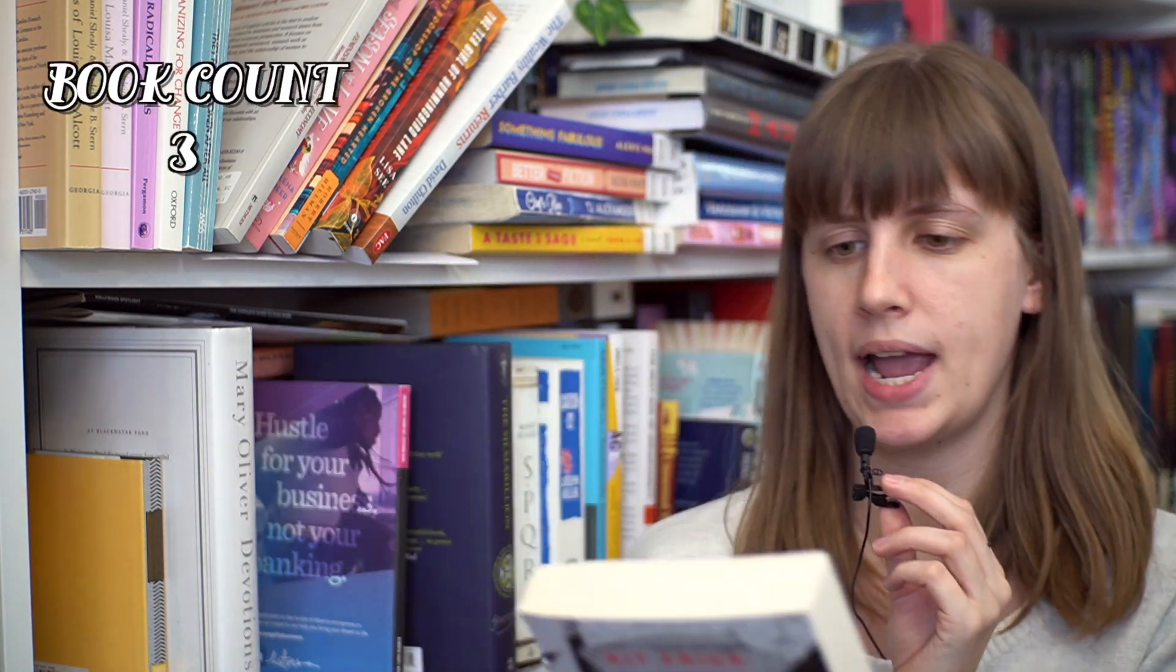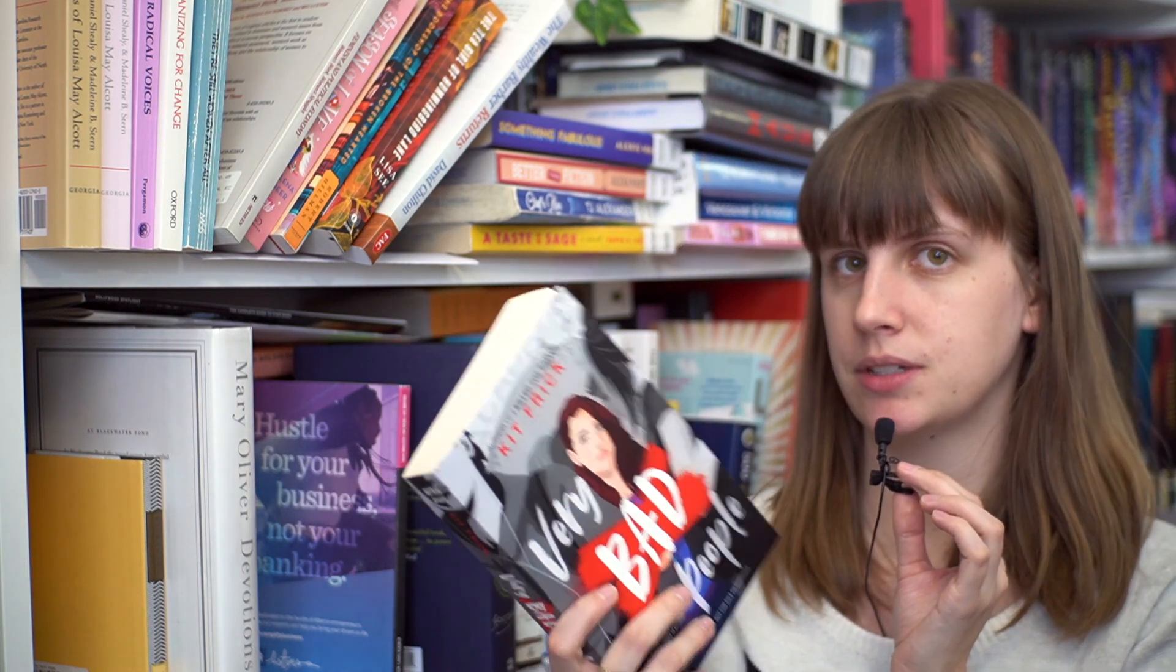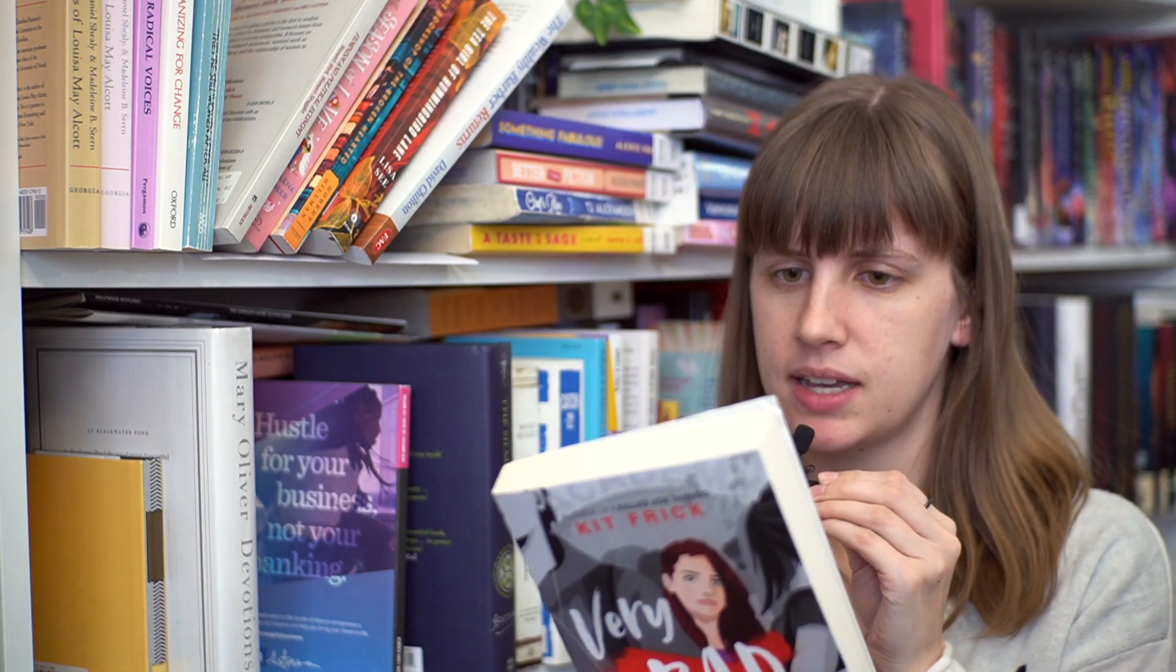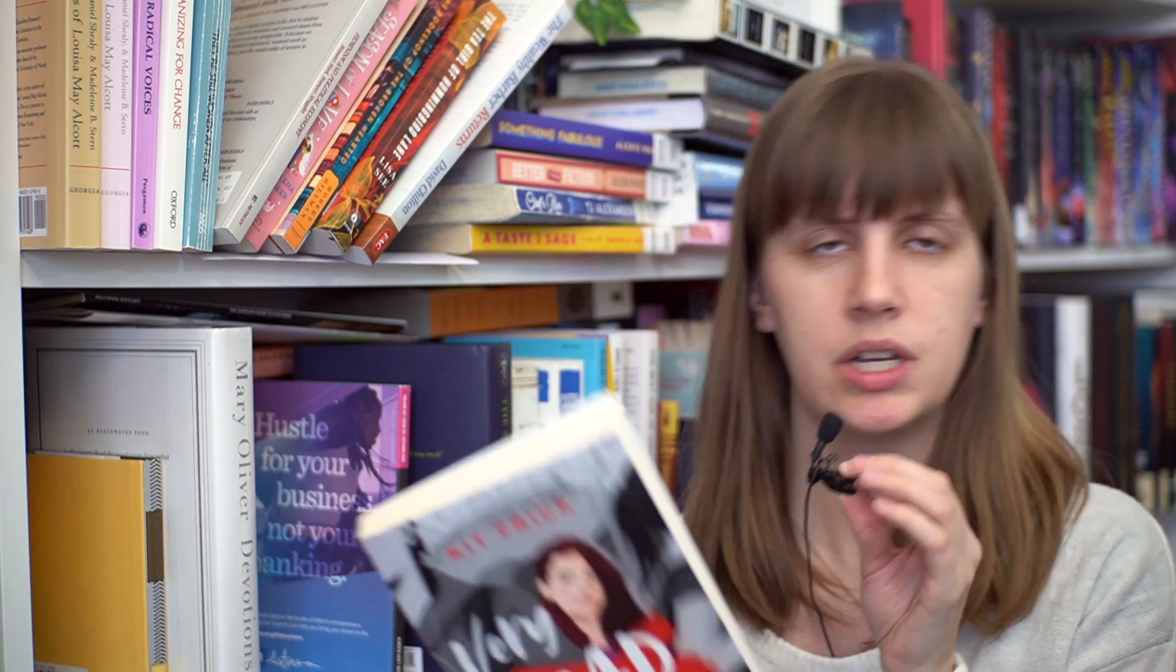Very Bad People by Kit Frick. This is a YA thriller. I don't know what's the vote. This was another arc that was sent to me and this is kind of like elite boarding school, secret society, it's kind of dark academia. Maybe I'll try and read this in October.